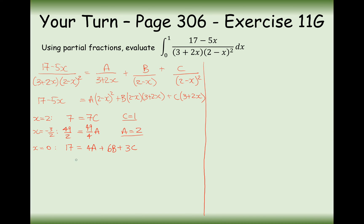Luckily we know the values for A and C, so substituting them in: 8 plus 6B plus 3. Adding those together gives 11 plus 6B. 17 minus 11 is 6, so 6B equals 6 — in other words, B equals 1.